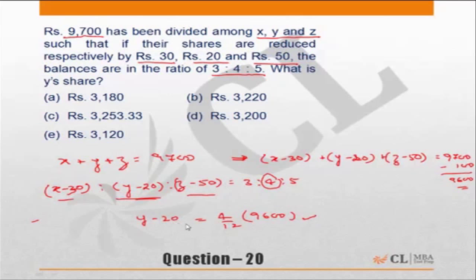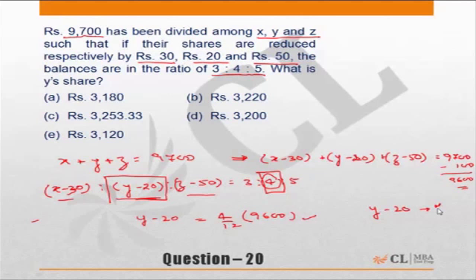However, there is also a standard way of checking the answer by looking at the choices. The starting point is that y minus 20 has to be a multiple of 4. So subtract 20 from each of the choices — if the result is not a multiple of 4, it is incorrect.